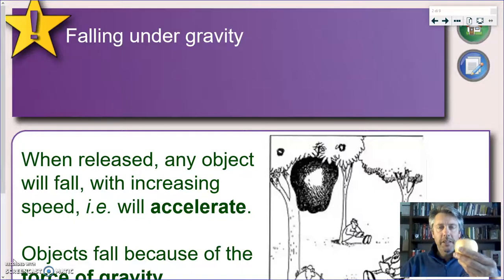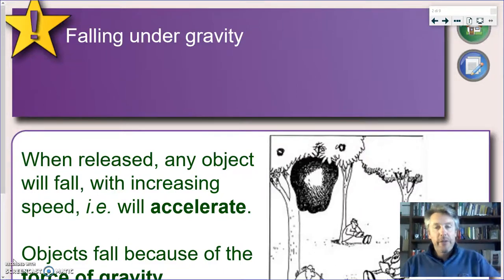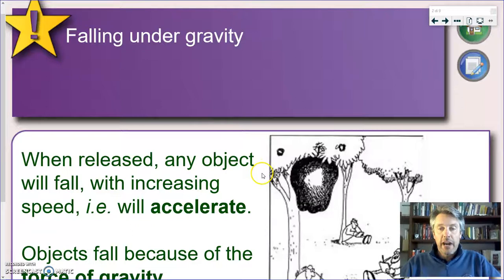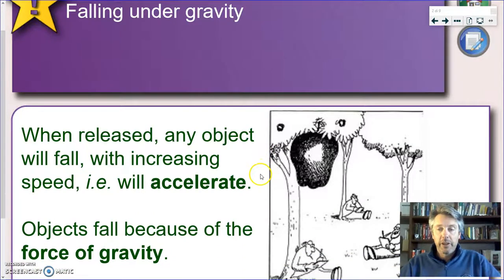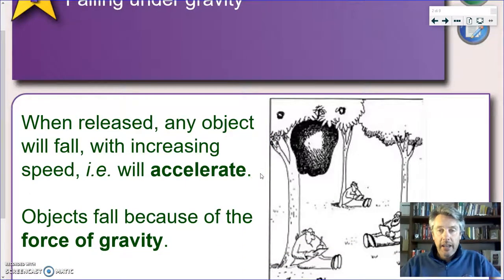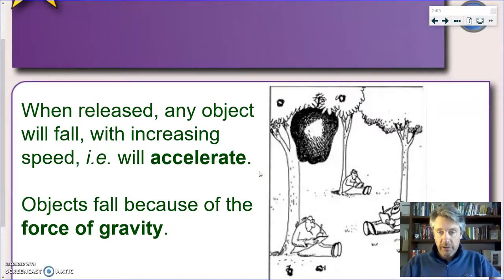And not surprisingly, today's lesson will start with an apple. Every time a physicist wants to talk about gravity, he has to use an apple. And the reference is to Sir Isaac Newton and his observation on falling apples and the following formulation of the law of universal gravitation.